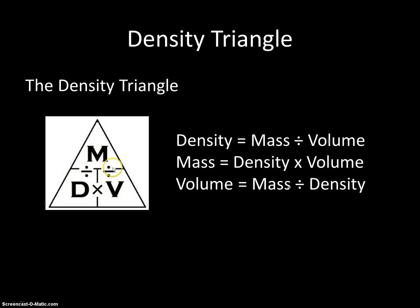This line that we drew horizontally across the middle — every time we cross this line, we are going to be dividing. The vertical line that splits up the bottom two chambers of our triangle is going to be a multiplication line. Anytime we cross that line, we're going to be multiplying. Let's look at how that works when we're actually trying to solve a problem for density, mass, or volume.